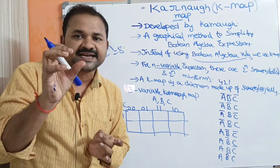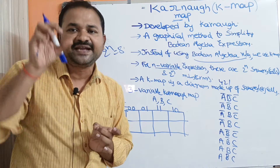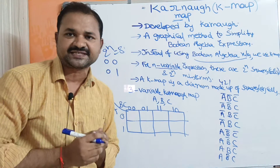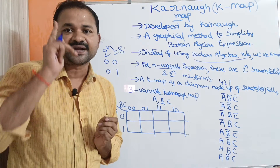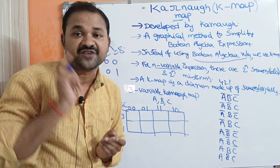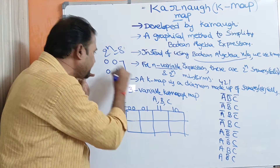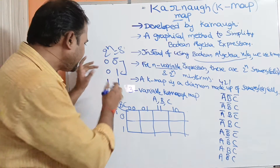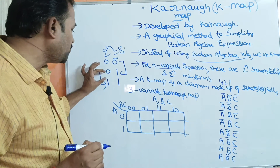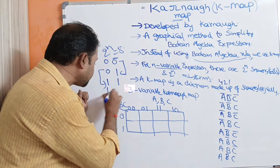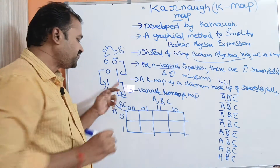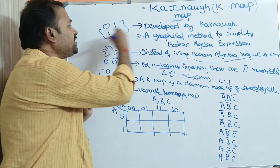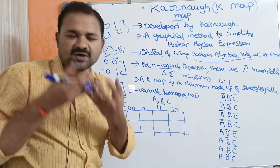If we take any two adjacent cells, the corresponding variables must differ by only one variable. For example, considering cells 0,0 and 0,1: only the second variable is different. Considering cells with combination 1,1 and the next: only the first variable differs. This is why after 0,1 we write 1,1 rather than 1,0 — writing 1,0 would cause a difference in two variables, making grouping quite difficult.